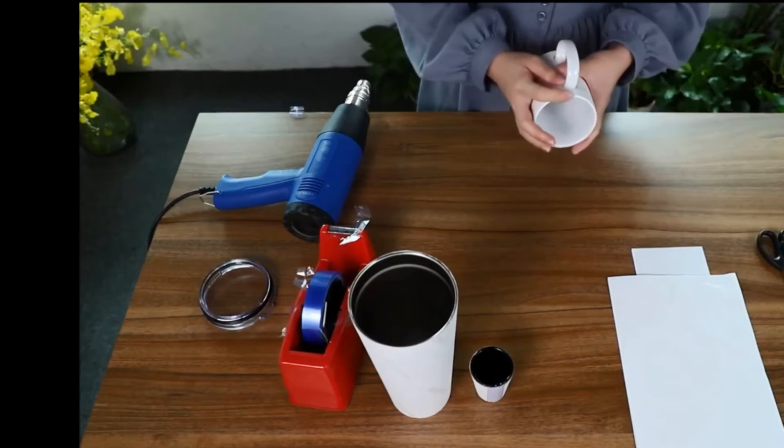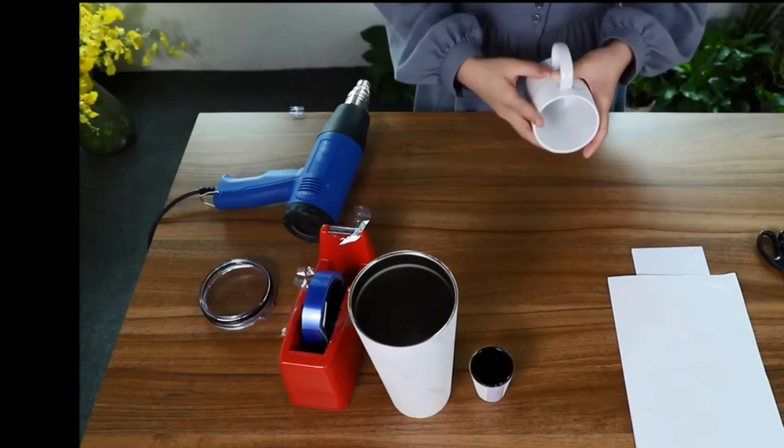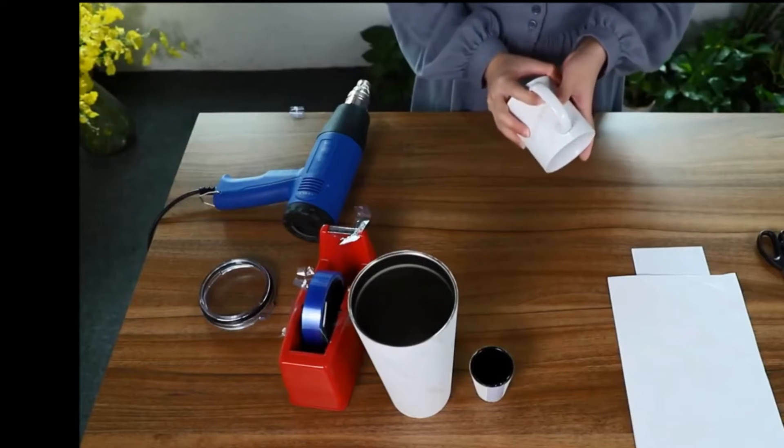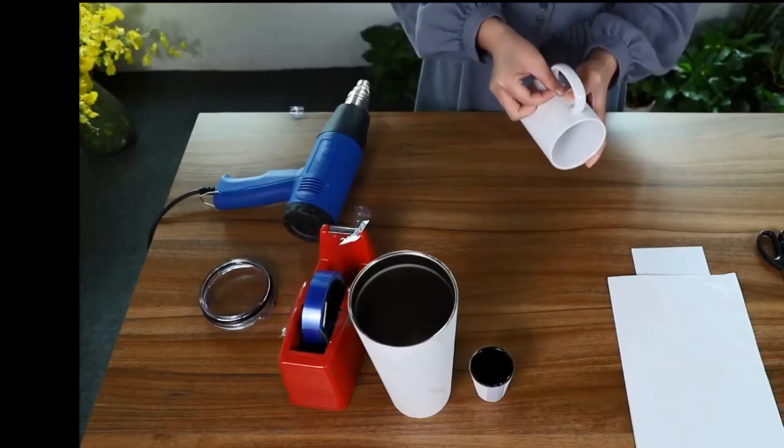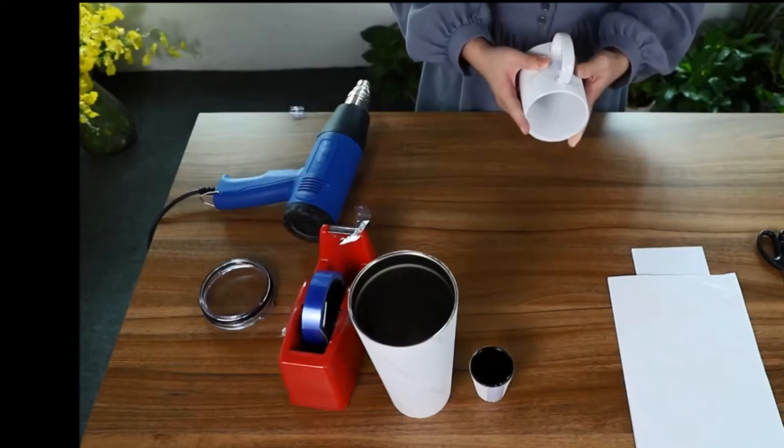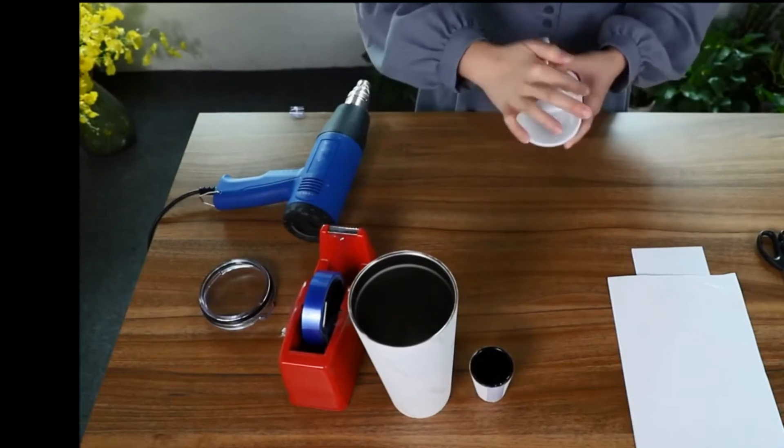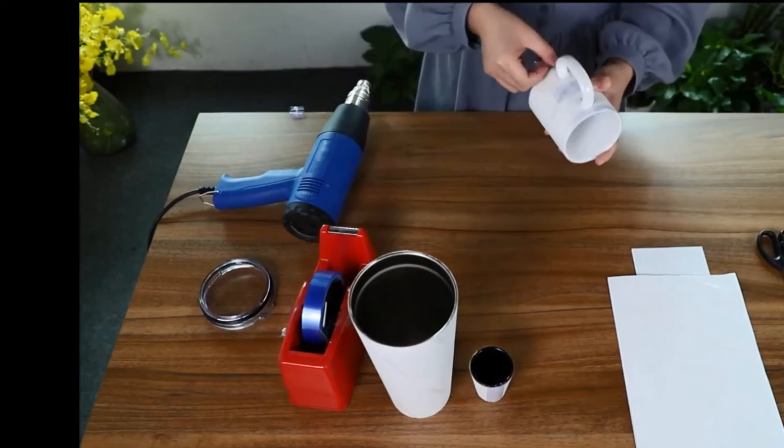And my image can be placed underneath the handle. All I need to do now is to use the tape to fix the image on the mug.